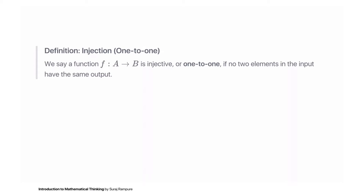The first type of function we care about is an injection, or a one-to-one function. We say a function f is injective, or one-to-one, if no two elements in the input have the same output. Another way of saying this is: a function is injective if whenever two elements of the domain have the same output, those two elements must be equal.